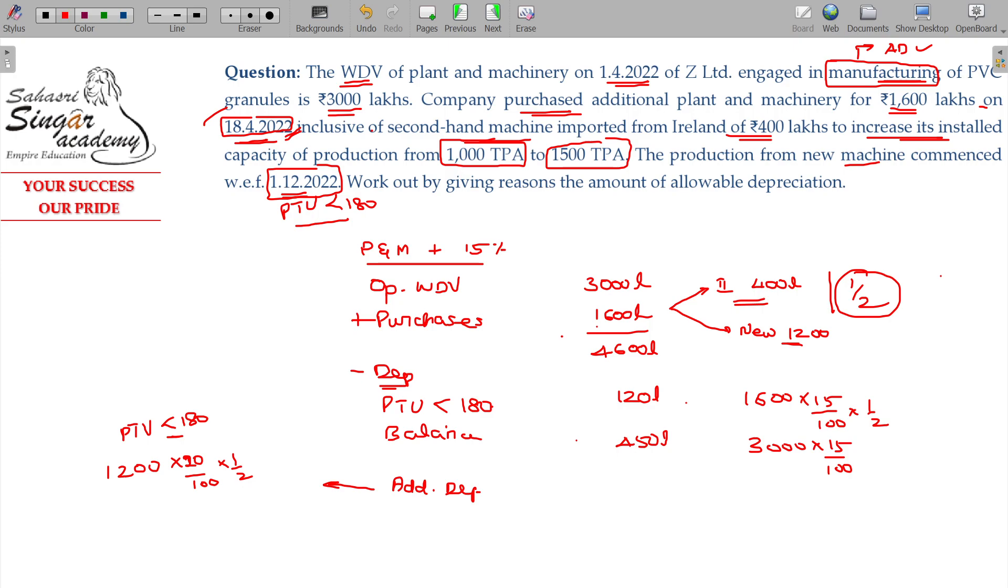So these three will be depreciated. 690 can be depreciated. What is the balance WDV? 3910 lakhs will be closing WDV.